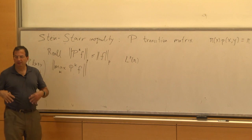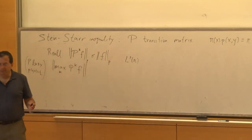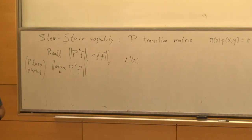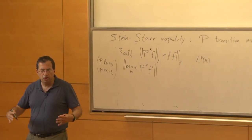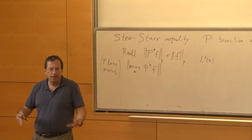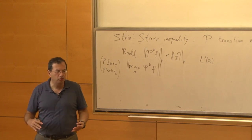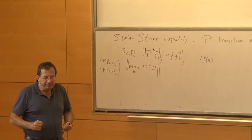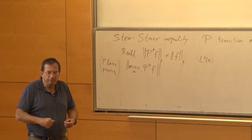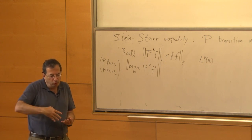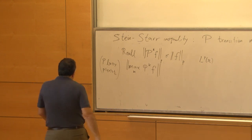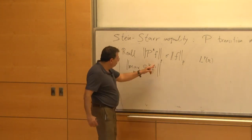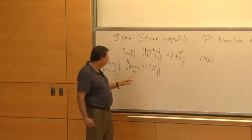P to the K F is the vector obtained by multiplying F by P from the left K times. You can think of it as a function: P^K F at the point x is the expectation of F at the point you will get by running the chain for K steps forward.